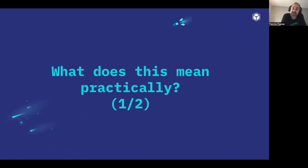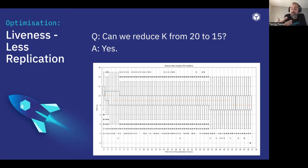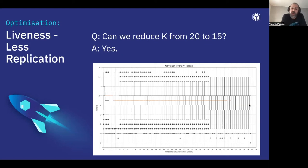What does this mean practically? It means that perhaps we can reduce the value of K from 20 — the current replication factor — to 15. We've done experiments on this: we reduced the replication factor, published CIDs and provider records, and monitored how long peers stay online and keep the provider record live. We see a drop from an average of 15 down to an average of 10 nodes, which still stay live for more than 35 hours. This means we can apply some optimization to the IPFS DHT as it is today.